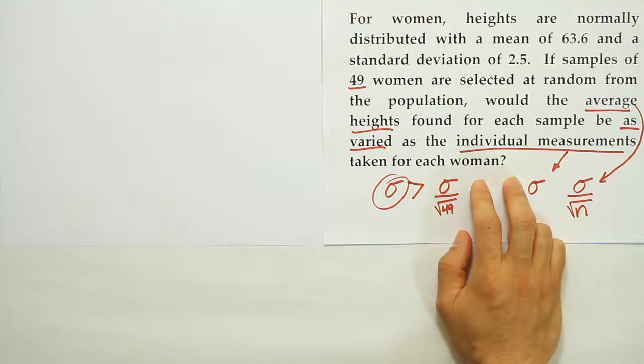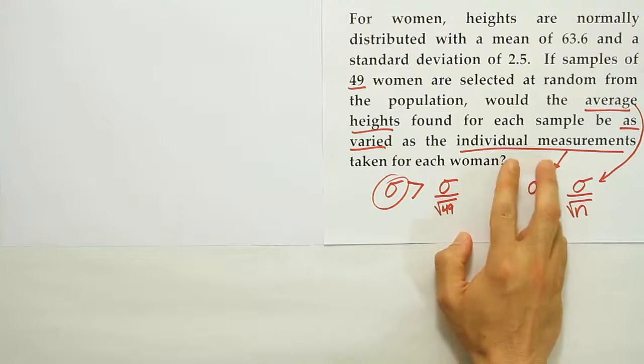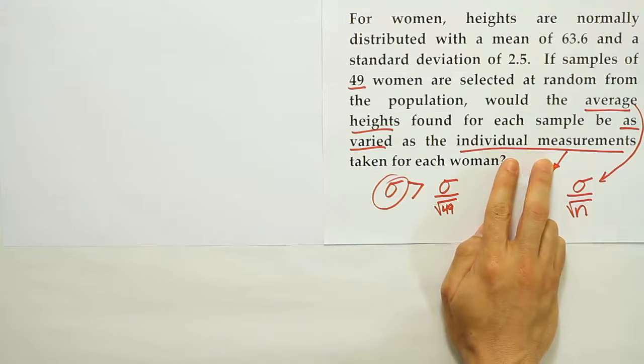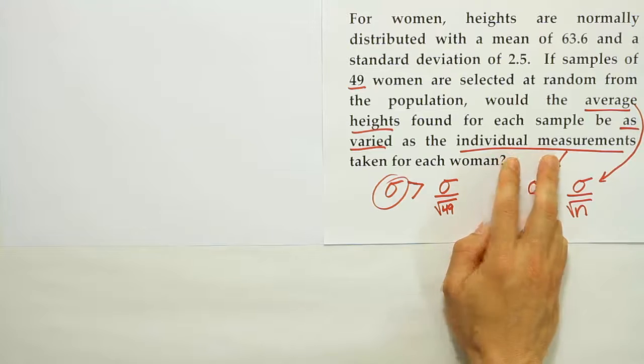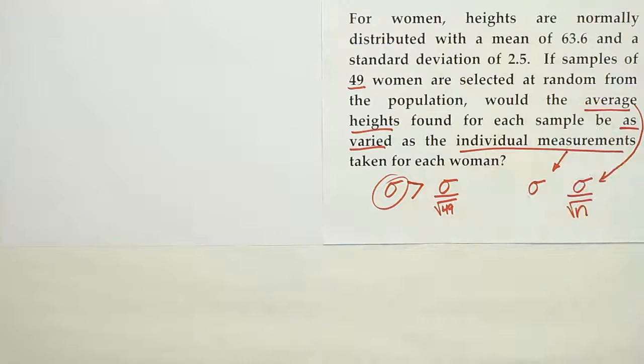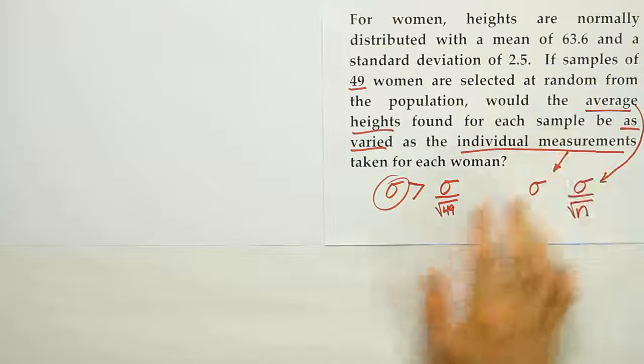But when you look at the individual scores in the classes, the individual students would score very different from one another. Some might have hundreds, some might have Fs, so there'd be lots of variation for the individuals. But between the classes, the averages for the classes would be very similar. So much less variation for the averages than you find for the individuals.